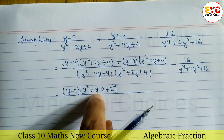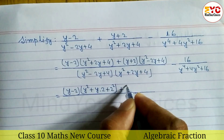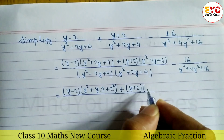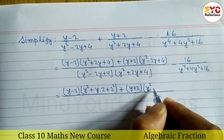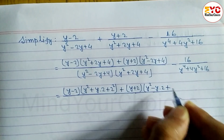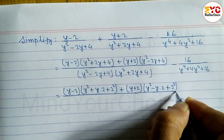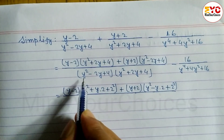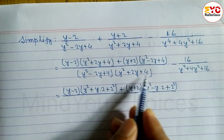Similarly we can write the formula for y plus 2, which is a plus b, so y squared minus ab — minus a into b, y into 2, plus b squared, 2 squared. The denominator becomes y squared minus 2y plus 4 and y squared plus 2y plus 4 multiplied together.